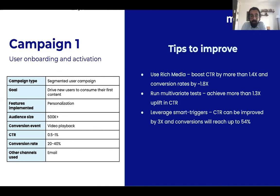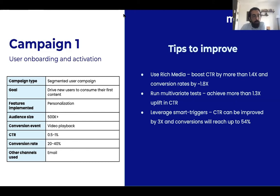The next thing the brand could have done better is leveraging triggers — what we call smart triggers — which is essentially picking up on context. As soon as the app is installed, a trigger can be sent within the next three hours asking the user to sign up or log in. That action tells you more about the user — their email address, whether they're an existing customer — context you can use for further personalization. Being able to trigger a message at the right time can improve click-through rates by even 3x on average — a significant improvement.